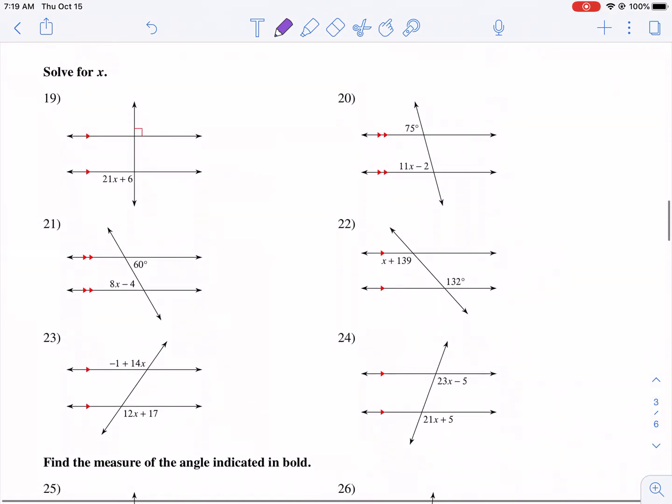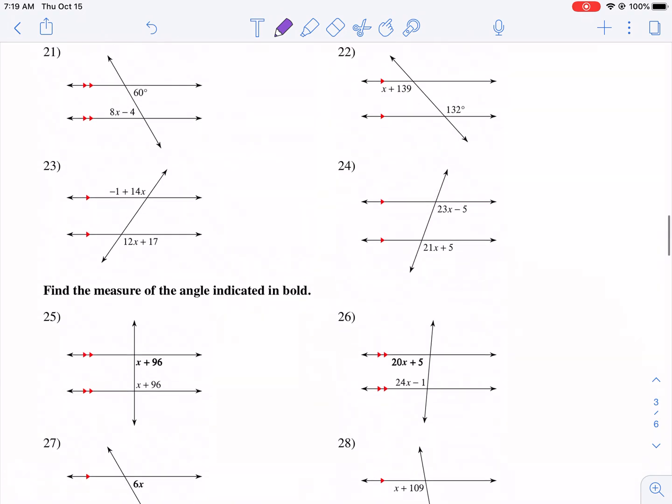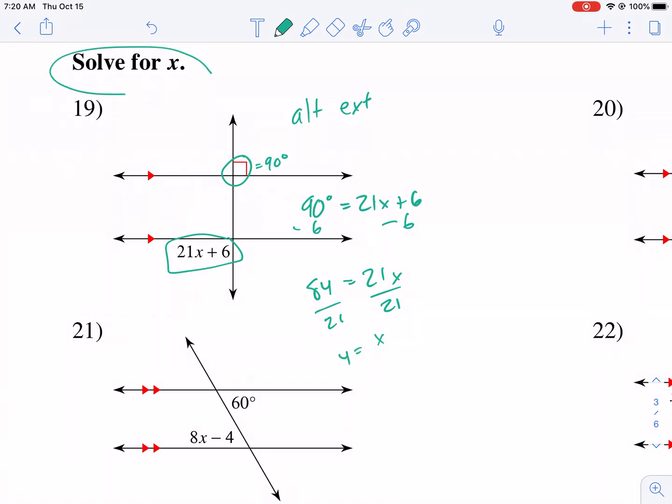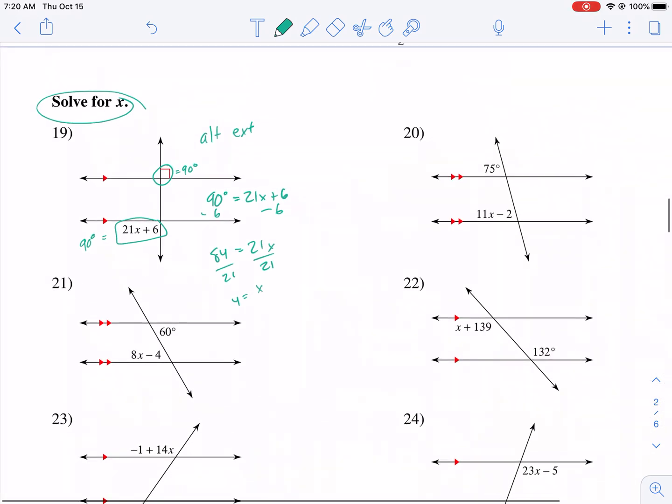Lastly, we're going to get into the tough part. This is kind of putting it all together with a little bit more math. So here we have number 19. What we do here is we first recognize that these are alternate exterior. We see that this is equal to 90 degrees and then we have 2x plus 6. Well, we know the two angles need to be equal, so we set them equal to each other, 21x plus 6. So first we subtract 6 from both sides. We get 84 equals 21x. We divide it by 21 and we get x equals 4.